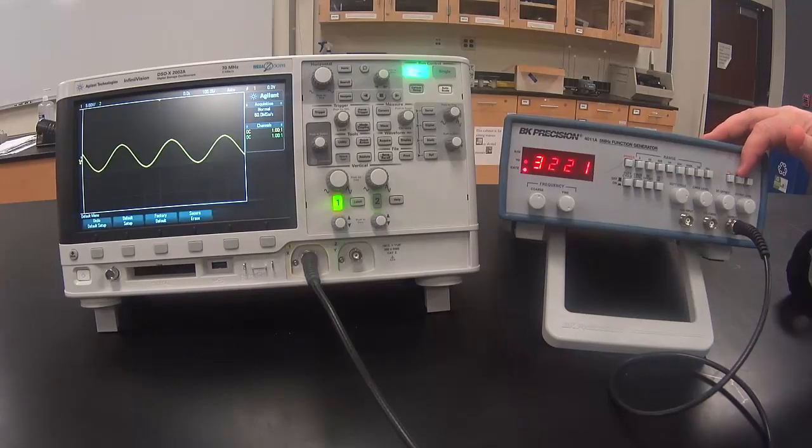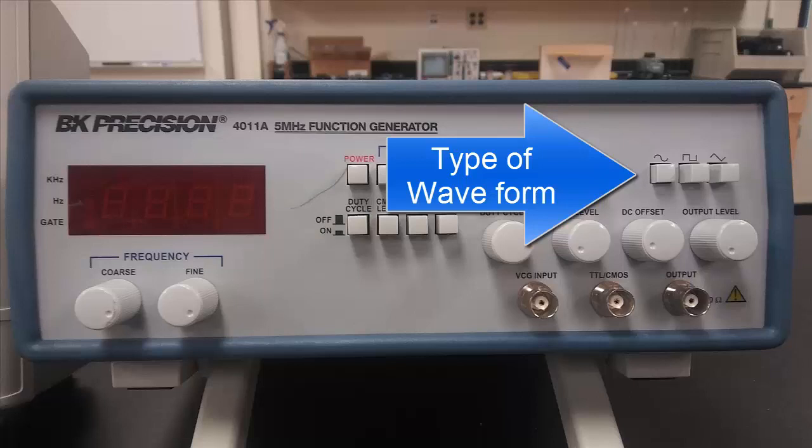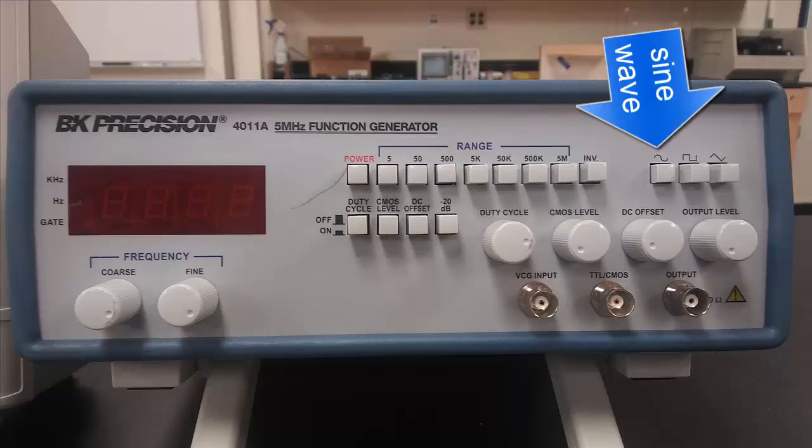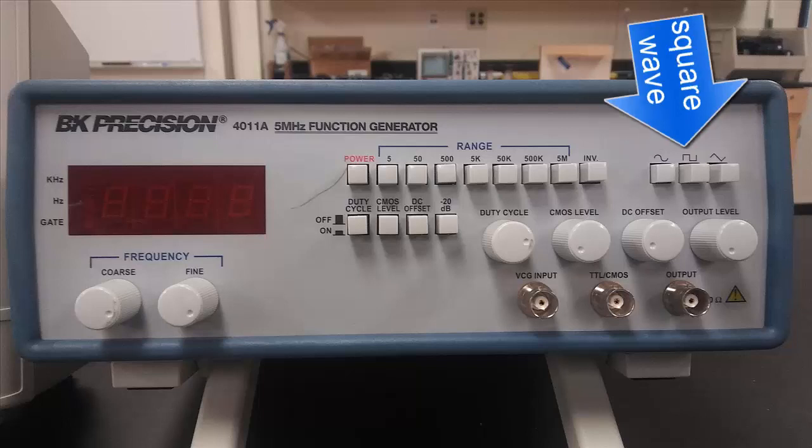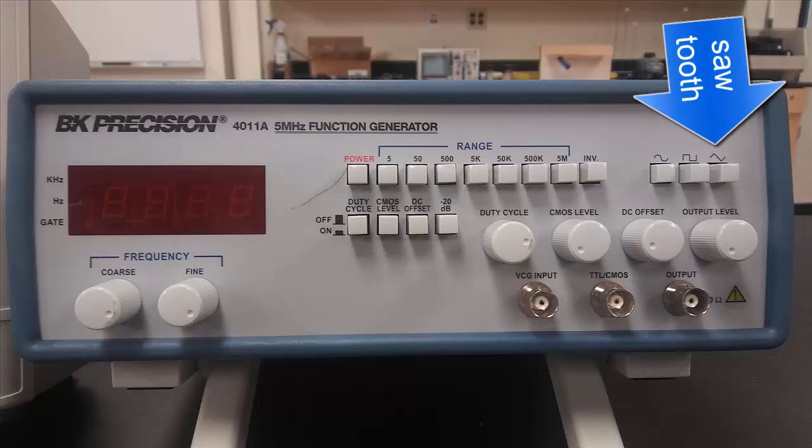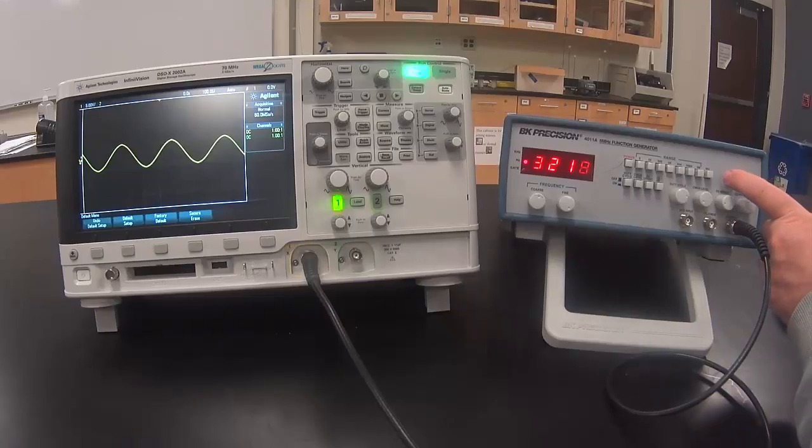These three buttons control the type of waveform that is being output. The first one outputs a sine wave or what's called AC current. The second one is called a square wave which we will use to mimic an open and closed switch in the RL and RC circuit labs. The last one is a sawtooth wave which we won't be using in our labs. Select a sine wave for this lab.